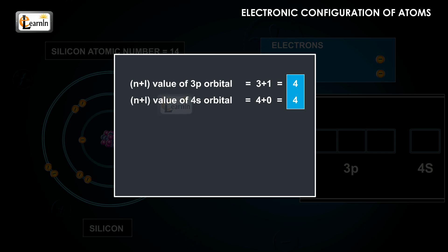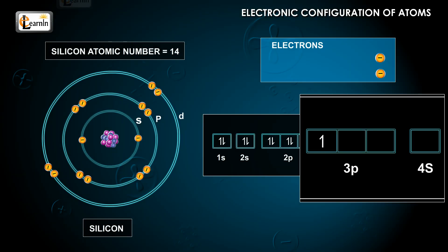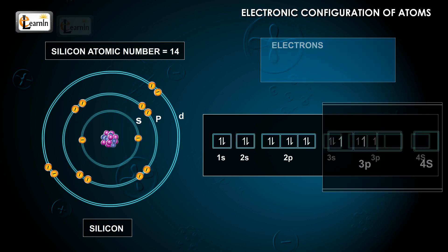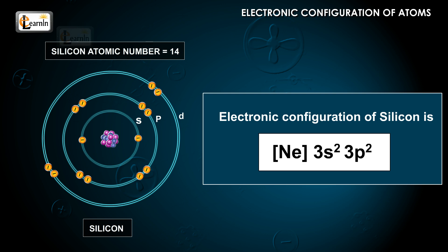This means that both orbitals have the same n plus l value, but the 3p orbital has an n value that is 3, which is less than the n value of 4s, which is 4. Therefore, the 13th and 14th electrons occupy the 3p orbital first. This means that the electronic configuration of silicon is Ne 3s2 3p2. The superscript represents the number of electrons present in the corresponding orbital.